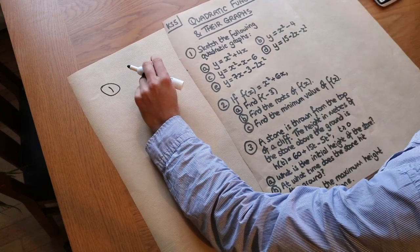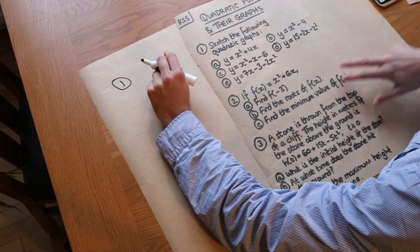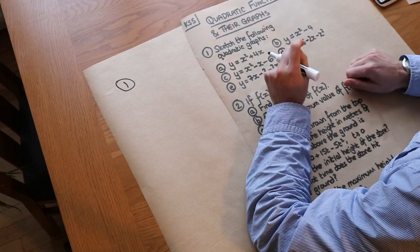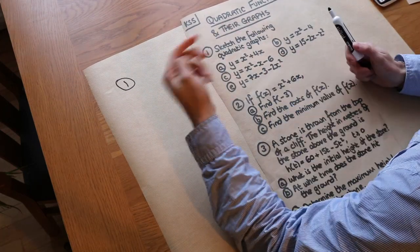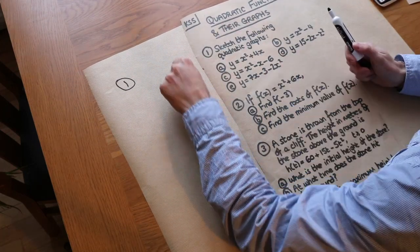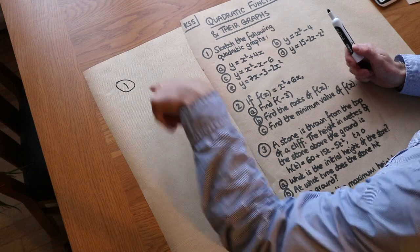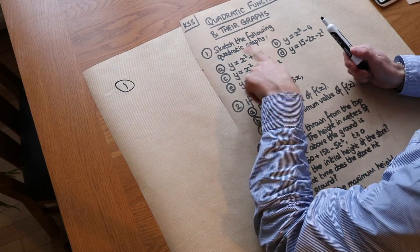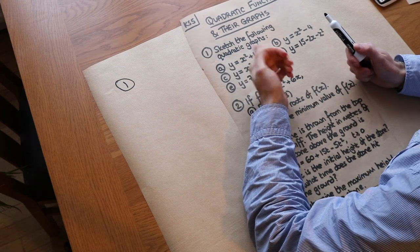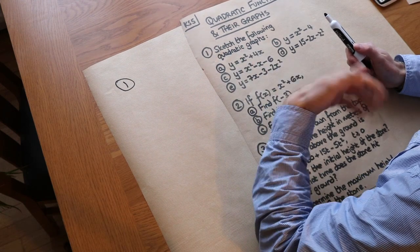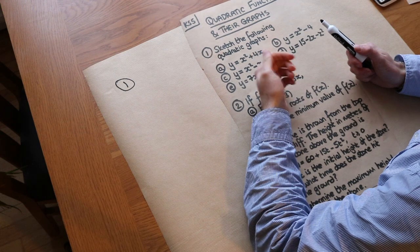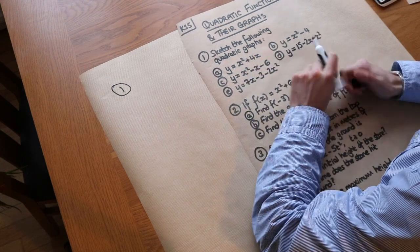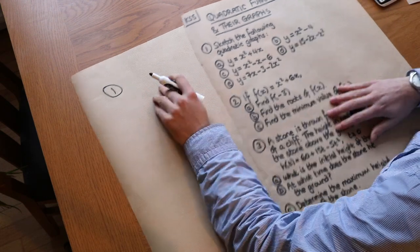Firstly I should make clear what I mean by a sketch. A sketch is different to a plot. In a plot we put a scale on the axis and we're interested in the exact points, but with a sketch we're only interested in the general shape as well as the intercepts of that graph with the x and y axes.